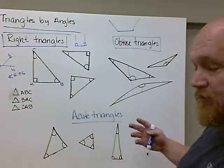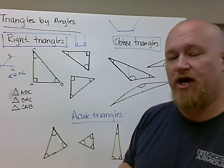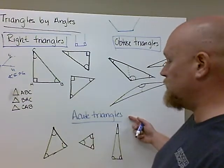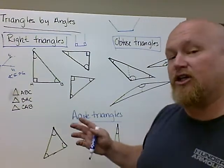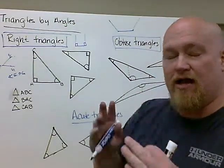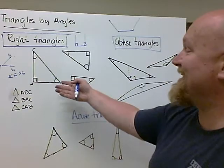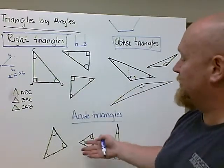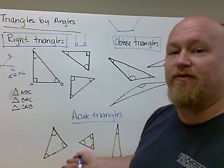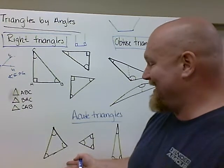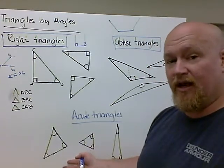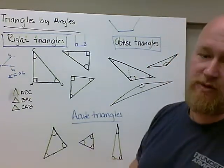Now, the last type of classification for triangles by their angle size are acute triangles. And remember those acute angles are the small, tiny, cute angles. Those angles, we can have three of. And if it doesn't have one of our special angles in it, then we automatically know it's made up of three acute angles, and it's an acute triangle.